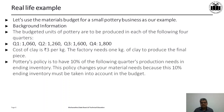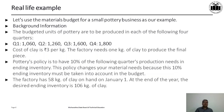The policy of the pottery is to have 10% of the following quarter's production needs in ending inventory. This 10% ending inventory must be taken into account in the budget. The ending inventory of Quarter 1 will be 126 — that is 10% of Quarter 2's production of 1,260. The ending inventory of Quarter 2 will be 160, since Quarter 3 production is 1,600, and so on. The factory has 58 kg of clay on hand on January 1. The desired ending inventory at year end is 106 kg, which is 10% of Quarter 1's production of 1,060.